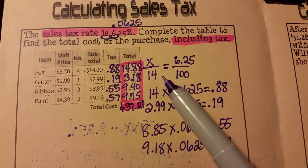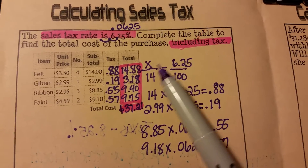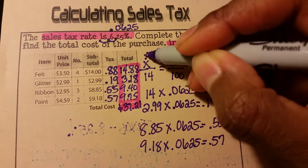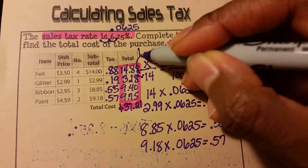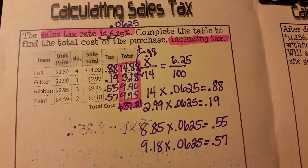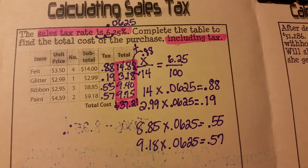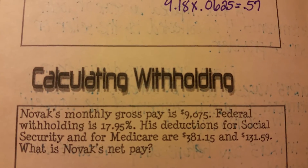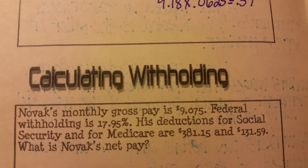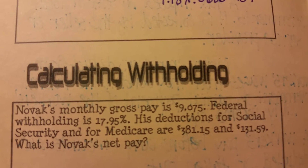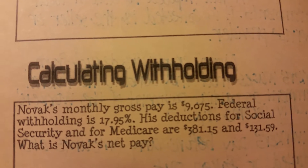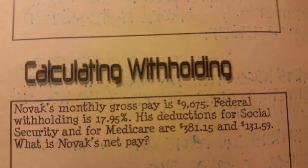That's how you calculate the sales tax. You can do it two ways — if you're more comfortable with setting up a proportion, you can do that. Just know that when you get the tax amount, you need to add it back to your subtotal to get your total including tax. Now the next example is calculating withholding — this gets into real-life pay situations. When you get a job, you'll know how to calculate your withholding and how much is going to be taken out of your check.